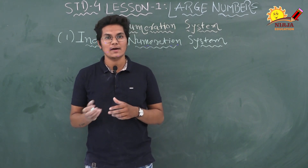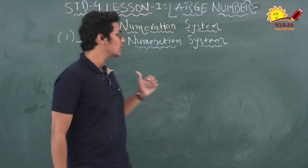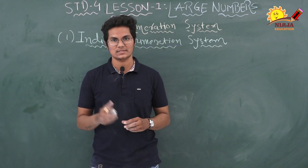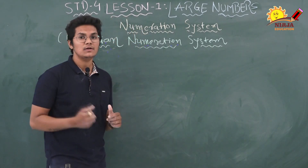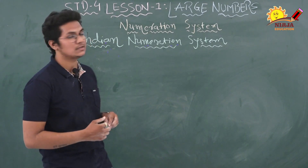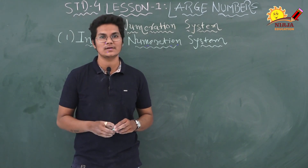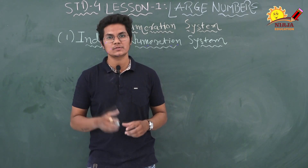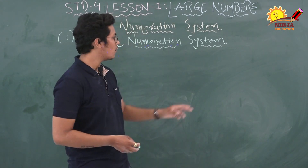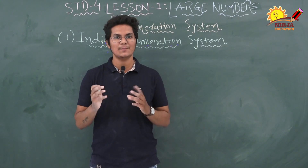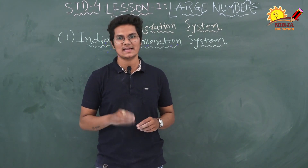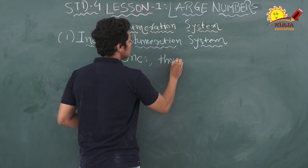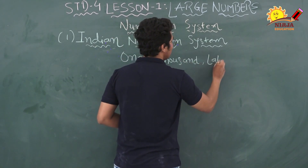The number system that we have learnt so far is called the Indian numeration system. This system is also known as the Hindu-Arabic numeration system. In this numeration system, numbers are split up into groups or periods, and these periods are formed from the right side of the number.